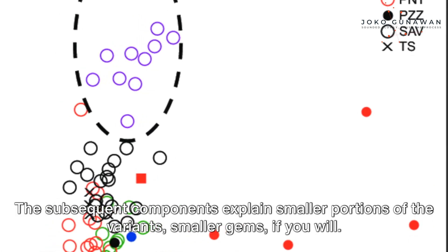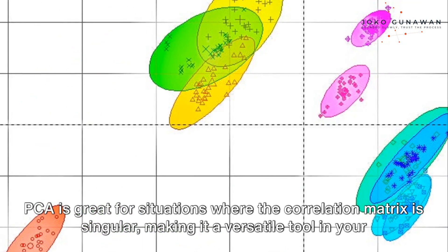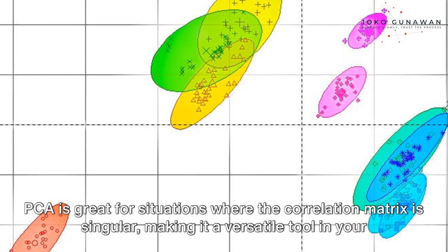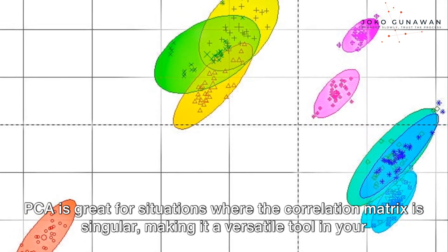The subsequent components explain smaller portions of the variance, smaller gems if you will. PCA is great for situations where the correlation matrix is singular, making it a versatile tool in your statistical toolbox.